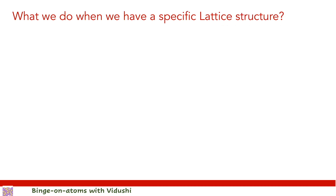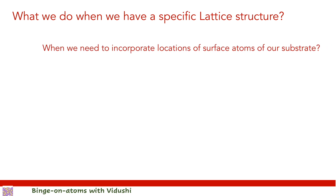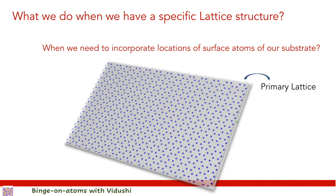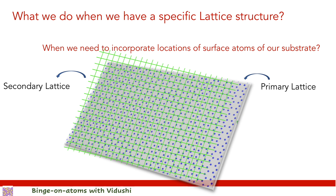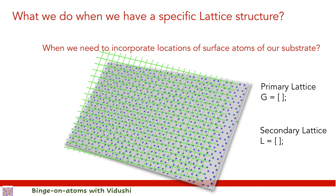When we have a specific lattice structure and need to incorporate the location of our substrate, we first create a grid to locate atom positions in the substrate — graphene here — and we call this the primary lattice. Then, based on the primary lattice, we create a second grid consisting of sites where atoms can be adsorbed or desorbed, and we call this the secondary lattice. We will add an additional matrix G in our MATLAB code to contain atom positions of carbon atoms, while the L matrix will again store the locations of adsorbing and desorbing atoms.